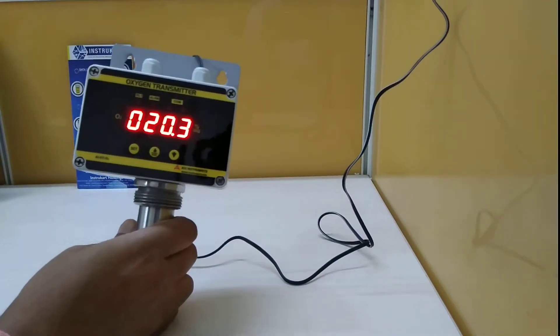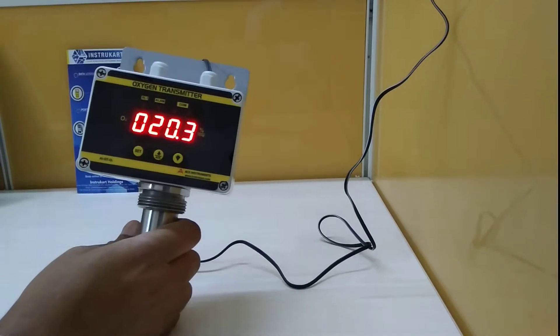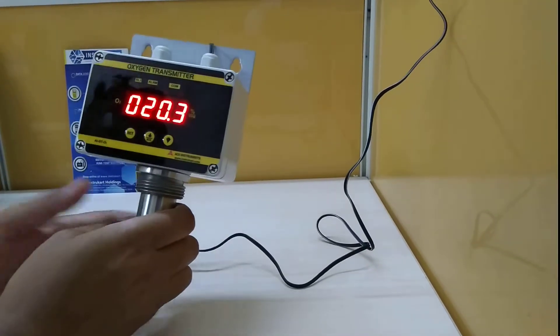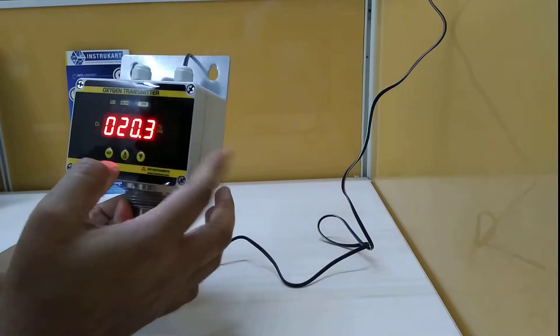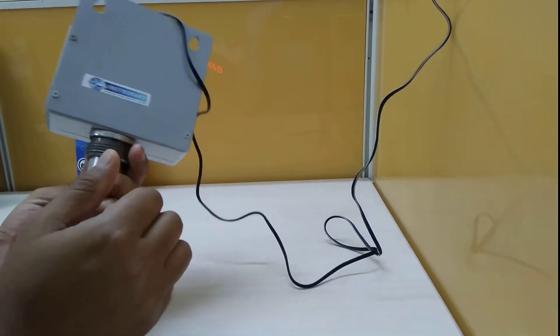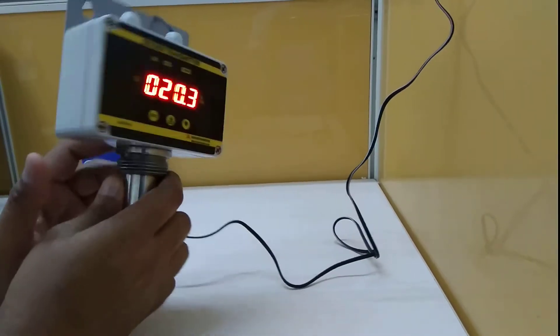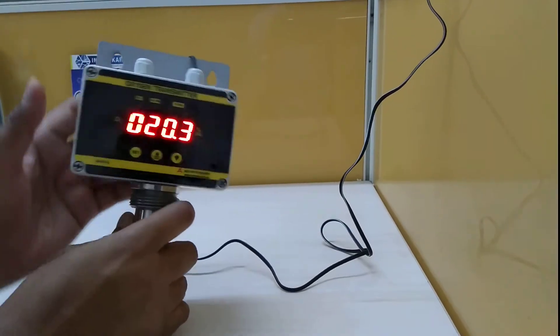You can replace the sensor in the field itself. It features an ABS plastic IP65-rated body with a 12-month warranty. It comes with a calibration certificate valid for one year and traceable to national standards.